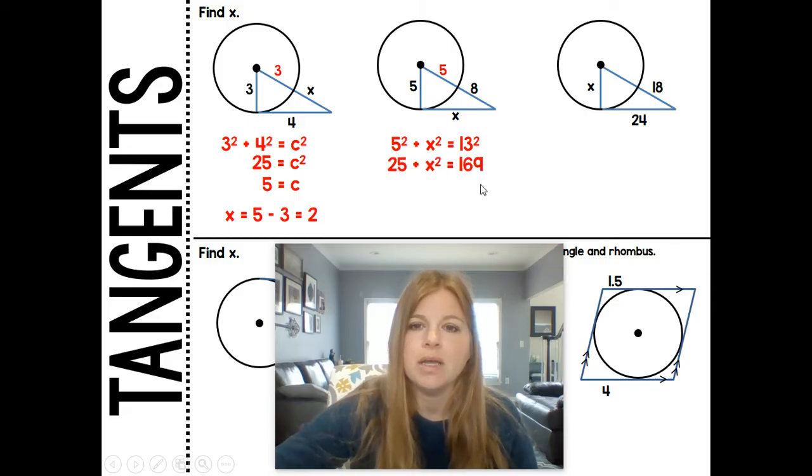If we do our Pythagorean theorem, again, ends up just being nice numbers. We'll get that X is equal to 12, and that's the tangent.